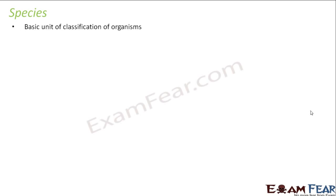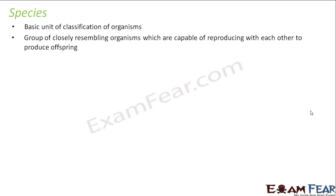Species are the basic unit of classification of organisms. They are a group of closely resembling organisms which are capable of reproducing with each other to produce offspring. An important point to note here is 'closely resembling organisms' — that means there will be a lot of similarities between organisms belonging to the same species.